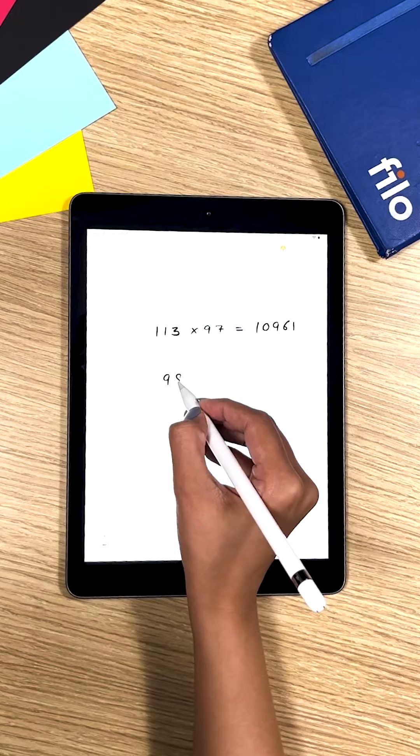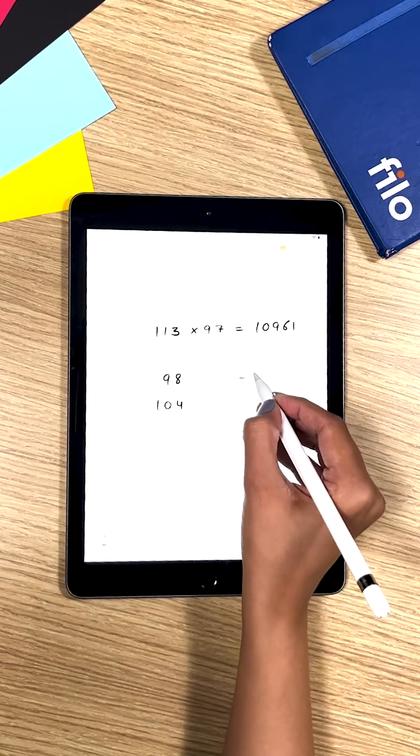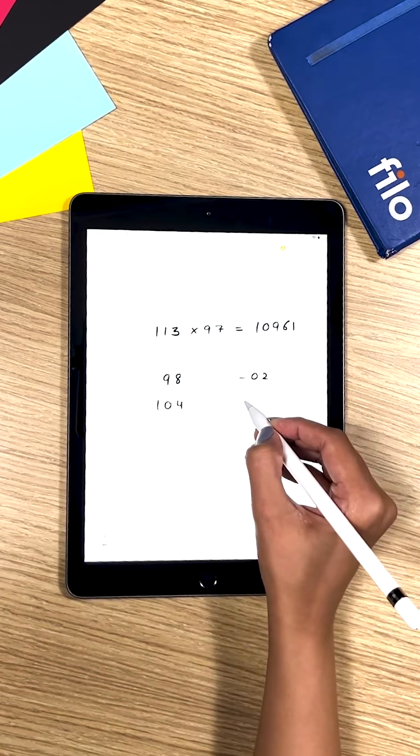So here you have 98 times 104. You know that 98 is 2 less than 100 and 104 is 4 more than 100.